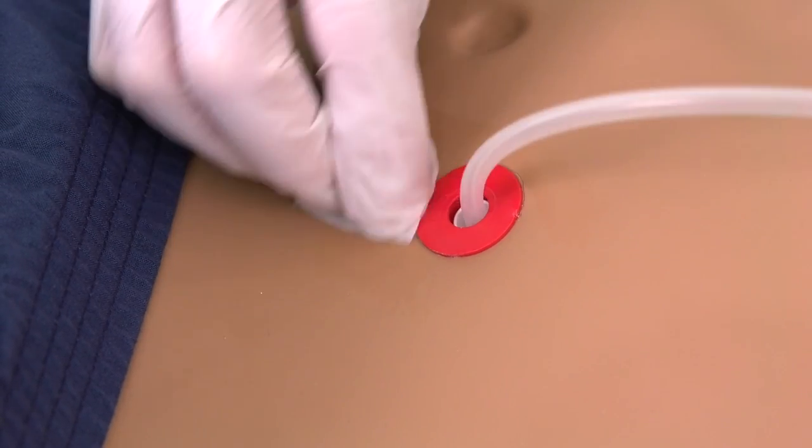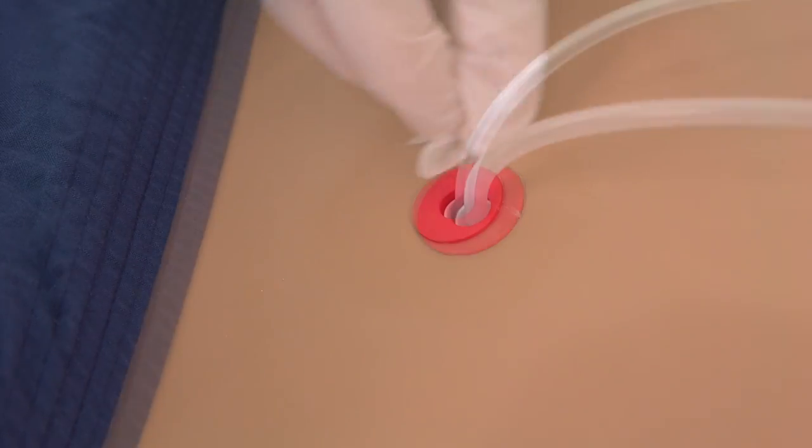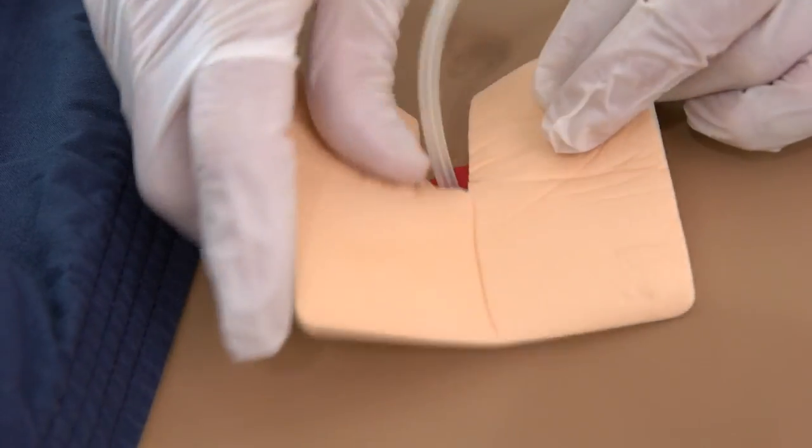Clean around the catheter exit site with a new alcohol wipe. Place the split foam catheter pad around the catheter.